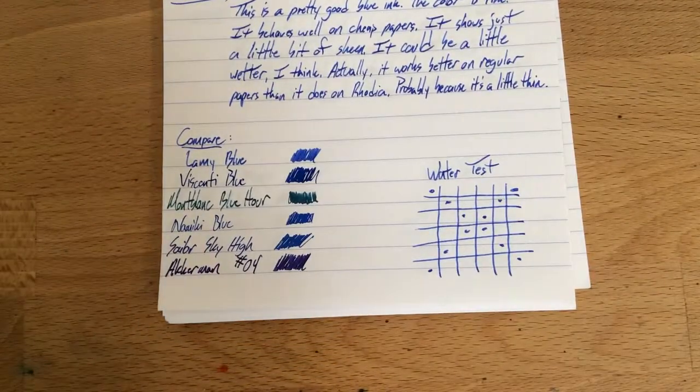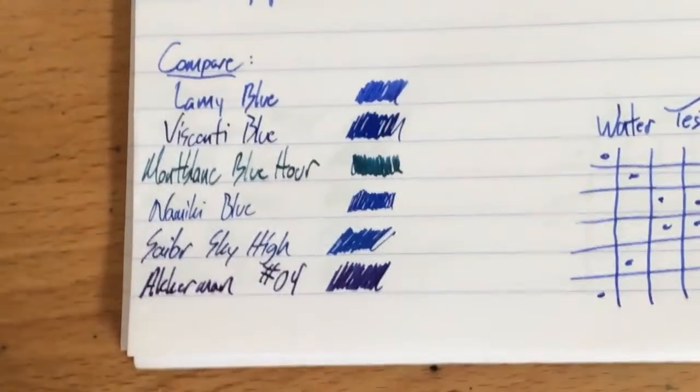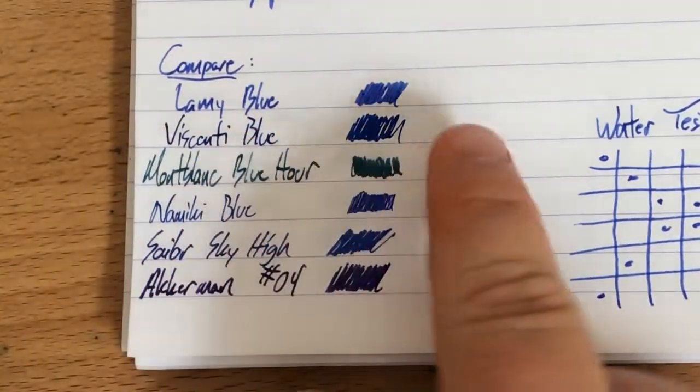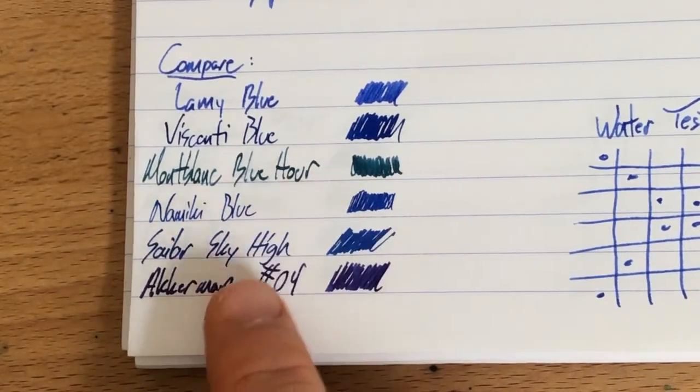I have it next to a whole bunch of other blues. I've recently just gotten a bottle of Visconti Blue - I got that at Anderson's when I was there visiting, and I think that's a great blue. I'm really liking it. Also a Blue Hour, which is definitely more green. I mean, if you look at those two next to it, it doesn't even look at all that blue. Namiki Blue, which is a fantastic blue as well. Sky High - everybody's favorite.